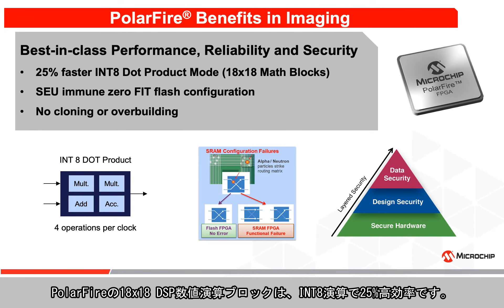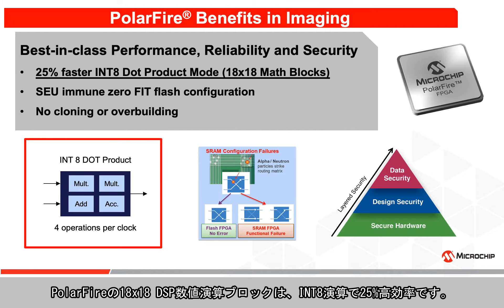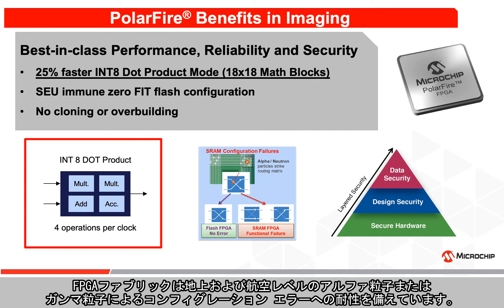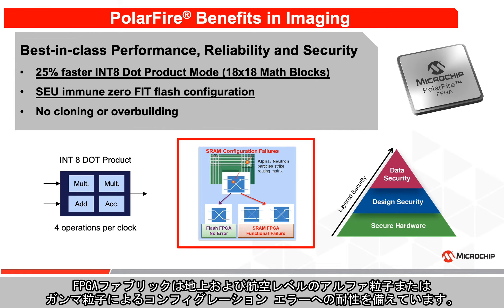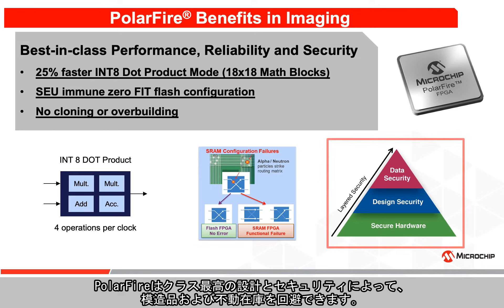PolarFire's 18 by 18 DSP MAF blocks offer a 25% higher efficiency for INT-8 operation. The FPGA fabric is immune to configuration errors due to alpha or gamma particles at ground and avionics levels. PolarFire provides best-in-class design, application, and data security to protect against device cloning and overbuilding.